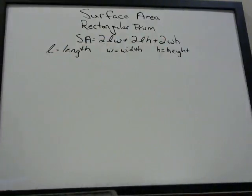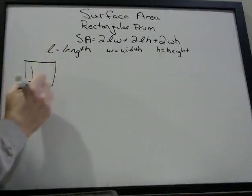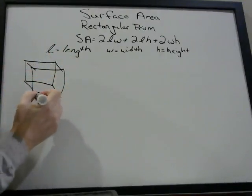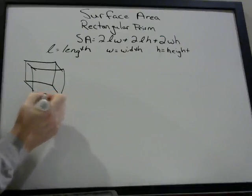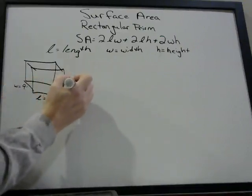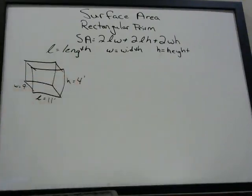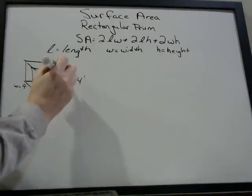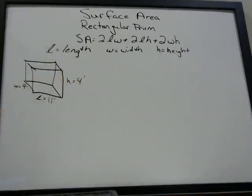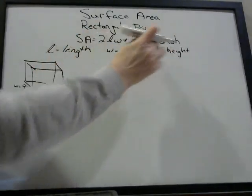So we will do a couple of examples. Let's say we have a rectangular prism where the length is 11 feet, the width is 9 feet, and the height is 4 feet. What is the surface area of this? We're just going to follow the formula and plug those numbers in.